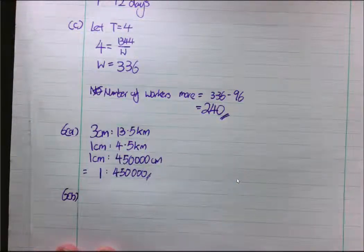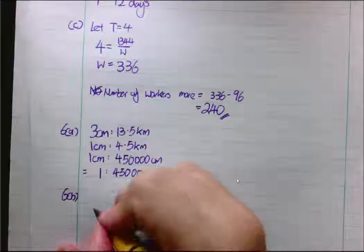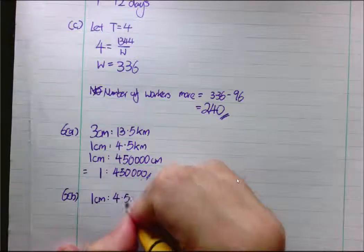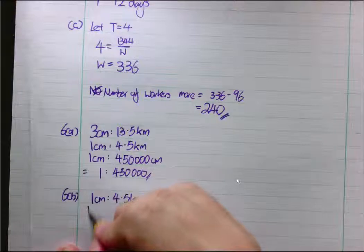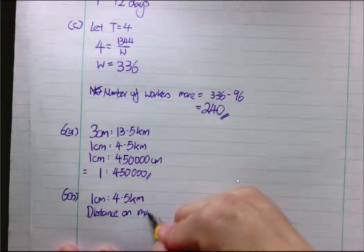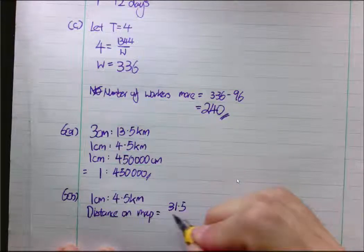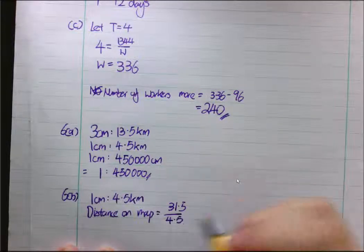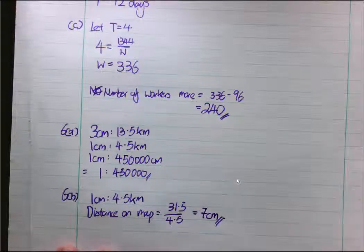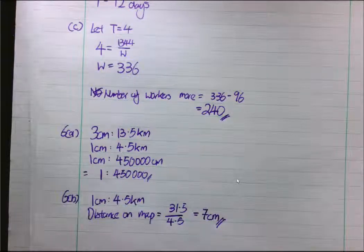6b, 31.5km apart from each other. So, 1cm represents 4.5km. So, you want distance on map. Distance on map is equals to 31.5 divided by 4.5. I get the distance on map is 7cm. That's 6b.